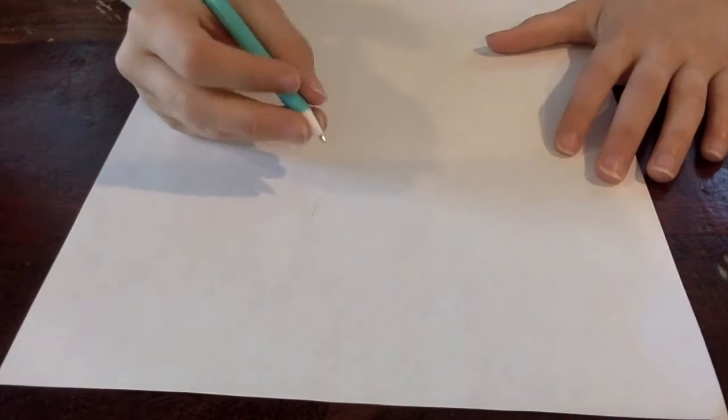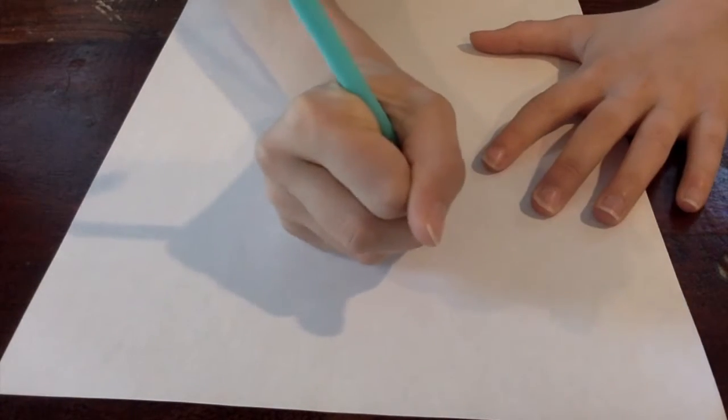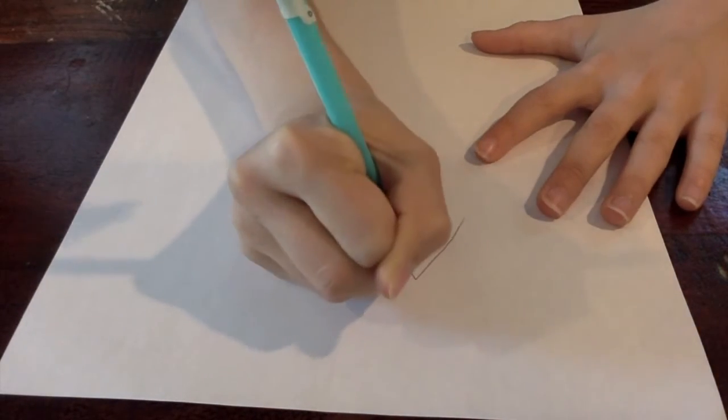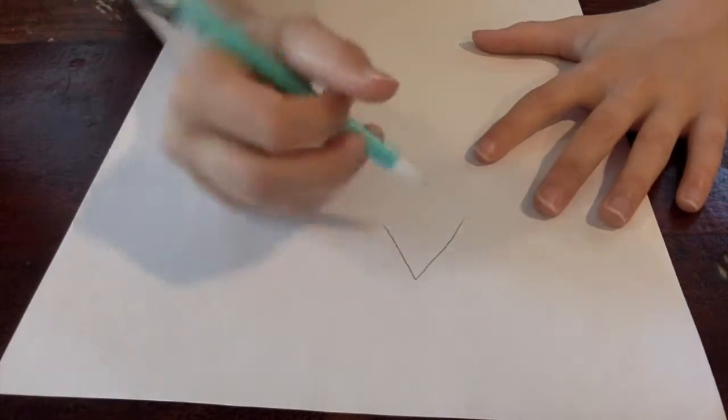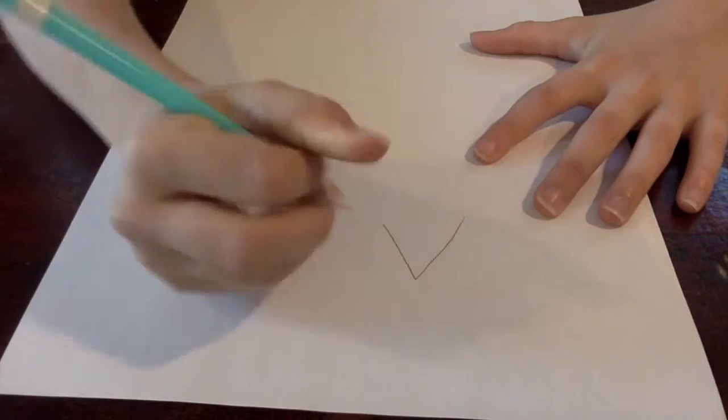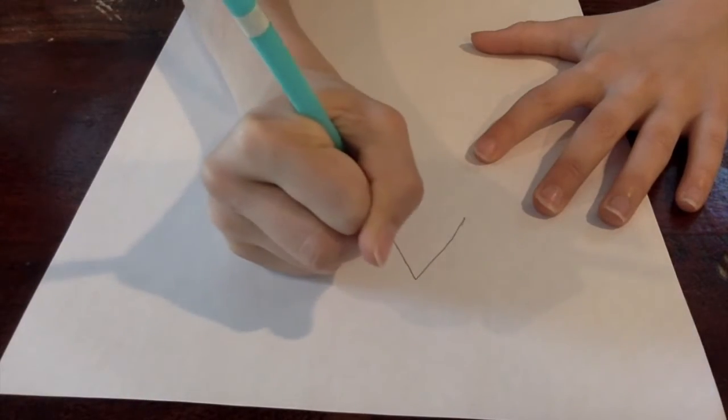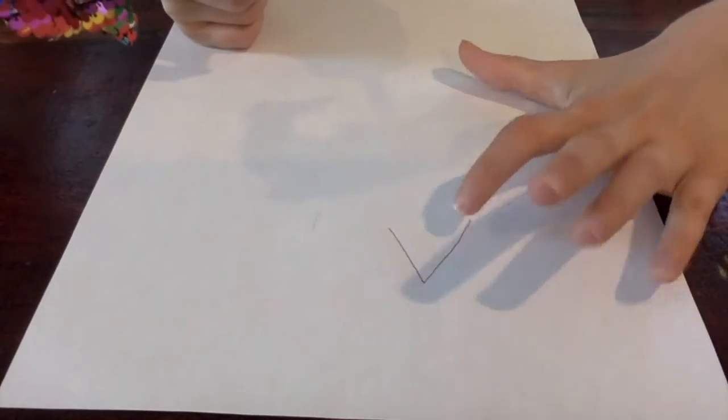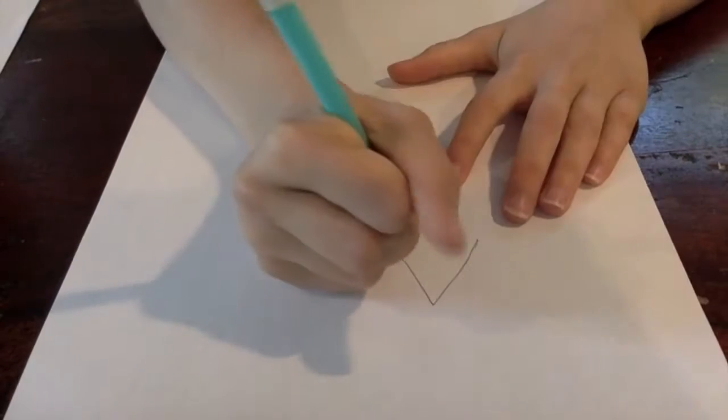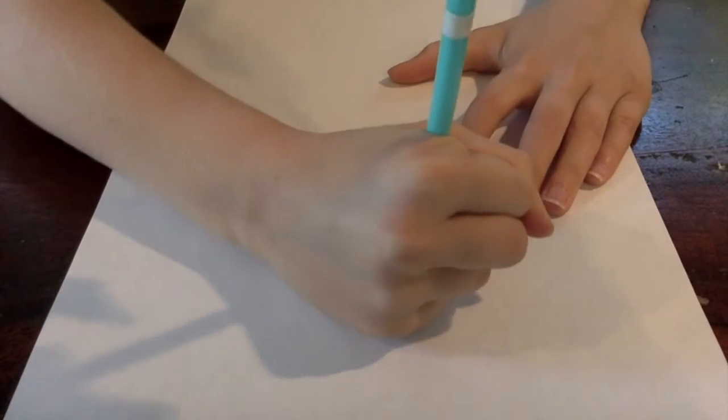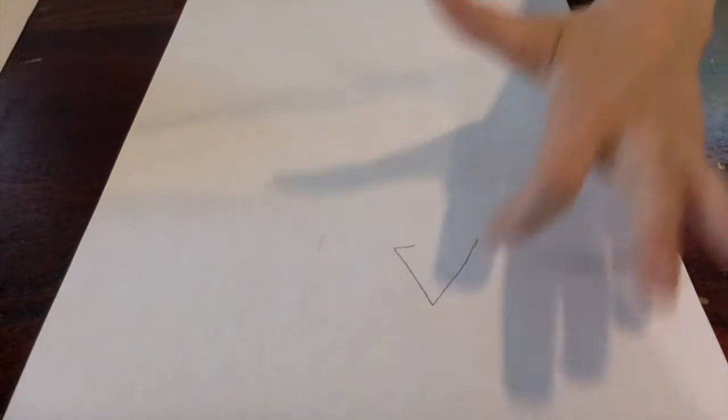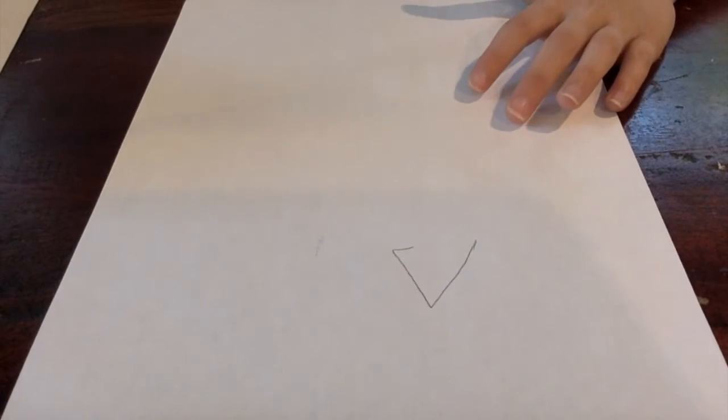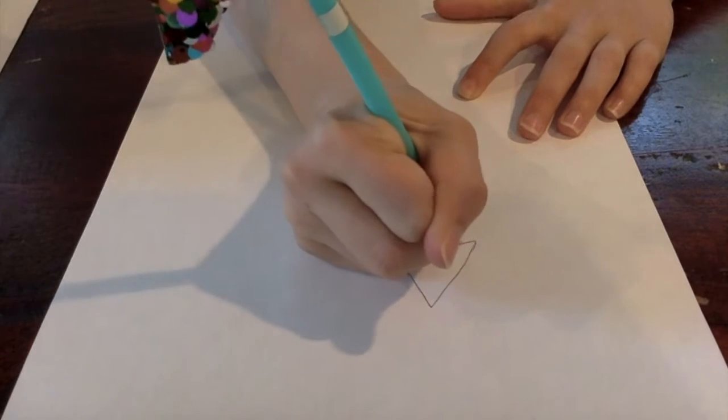So the first step is you're going to want to draw a triangle, but actually this time when you're drawing it, you don't want to put the line on the bottom. You just want to draw two lines that connect. Now when you're done with that, you're just going to draw a line at the bottom, but don't totally connect it to the other line. Then repeat this step for the other side.